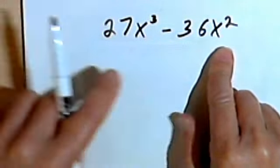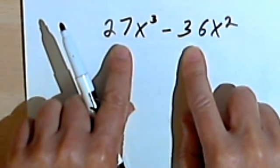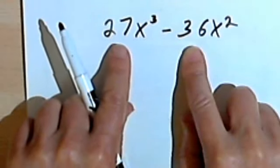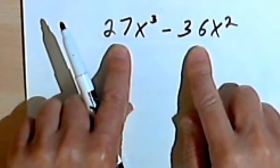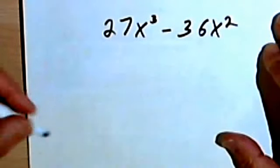The variables, the x to the third and the x squared, won't present a problem. But let's say I'm not sure about what the greatest common factor is going to be with my 27 and my 36. What I'm going to do is create something called a factor tree.